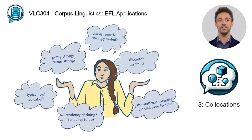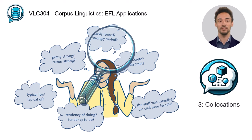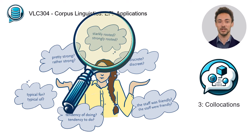Unit 3 will then introduce you to collocations. These are natural word pairings that often pose problems for learners due to their unpredictability. For example, is it starkly rooted or rather strongly rooted?